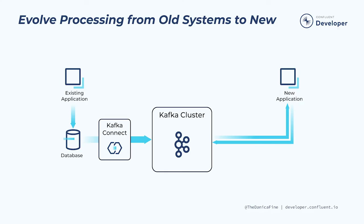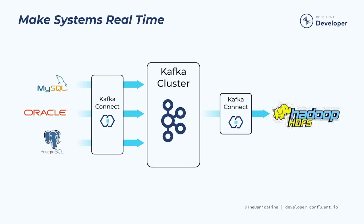All the while, new applications can be built, driven by the stream of events captured from the underlying database. When the original application records something in the database — say an order is accepted — any application subscribed to the stream of events in Kafka will be able to take an action based on those events, such as a new order fulfillment service. Many organizations have data at rest in databases and will continue to do so, but the real value of data lies in our ability to access it as close to when it's generated as possible. By using Kafka Connect to capture data soon after it's written to a database and translating it into a stream of events, you can create so much more value — adding a search index, analytics cluster, or triggering applications to recalculate an account balance or make a recommendation.